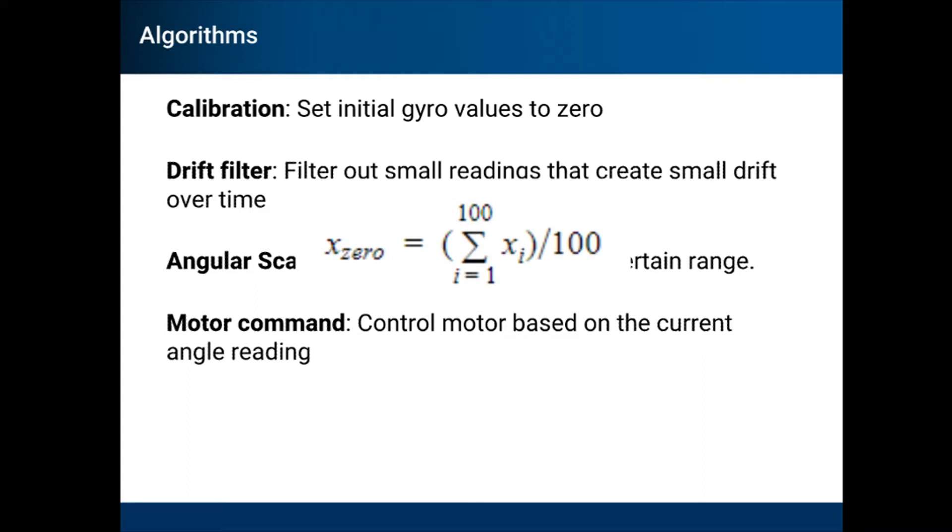To do this, we took in 100 values from the gyro and averaged them to find the initial resting point for the gyro. The gyro reading was then subtracted from this, and this was decided as the 0 point for the gyro.